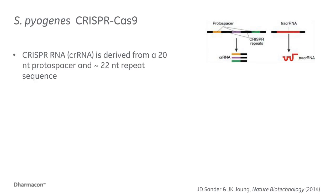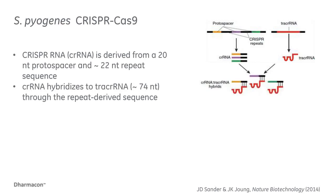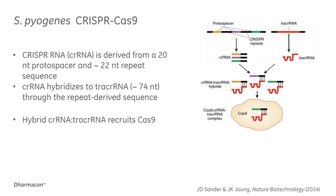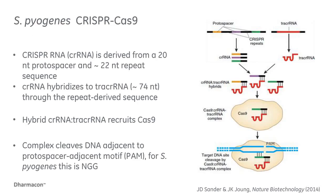In S. pyogenes, the CRISPR-RNAs are transcribed and processed into short RNAs with a 20-nucleotide spacer-derived sequence and a 22-nucleotide repeat-derived sequence. Separately, a longer RNA called tracrRNA is also transcribed. The CRISPR-RNA and tracrRNA hybridize and then recruit the Cas9 nuclease, which uses the spacer-derived sequence as a guide to its DNA target. The target sequence is proximal to the 3-nucleotide protospacer-adjacent motif, or PAM. Once all components are in place, the DNA is cleaved by the Cas9 nuclease and repaired by the cell's own repair pathway.